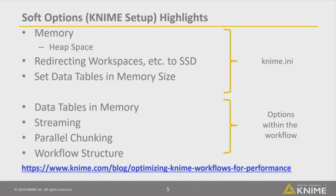I wanted to talk about where your possibilities are when you want to improve the software setup and scale the KNIME analytics platform for best performance. First, obviously, is memory. All data analytics platforms are very fast when you can perform operations inside memory. However, by default KNIME doesn't take all your system memory, so please change this in the KNIME.ini. If you've set enough memory and the heap space is set correctly, you can also use an SSD for faster backing up and using temporary spaces.